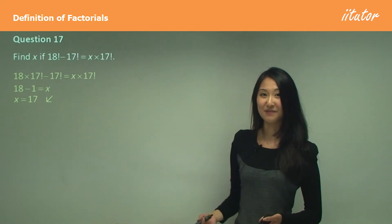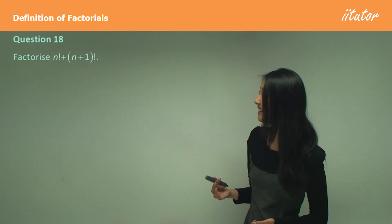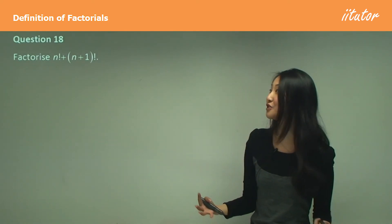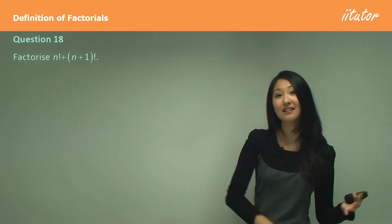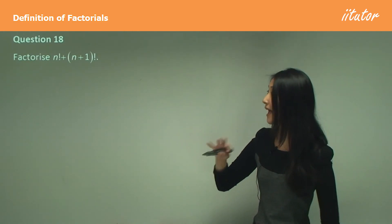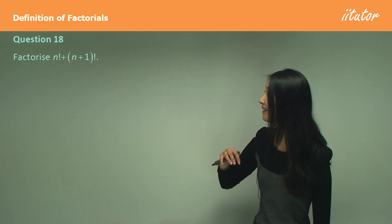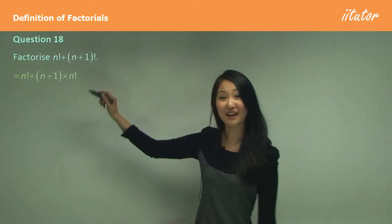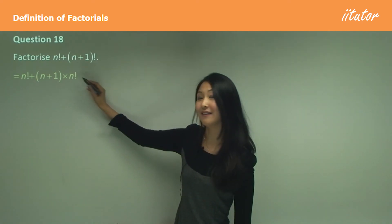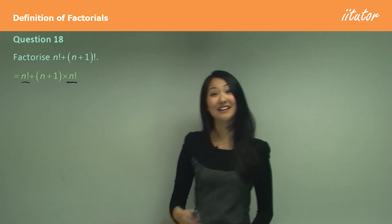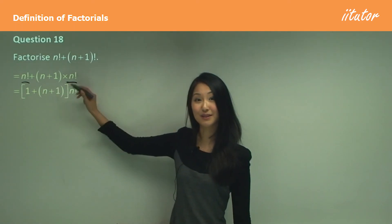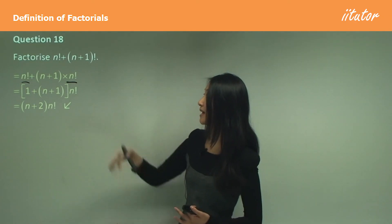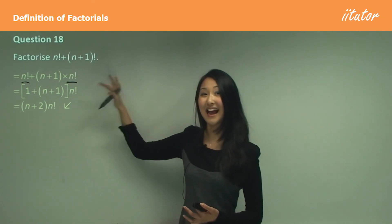Once you get used to factorials it's really not that difficult — you just treat them like normal numbers. Question 18: factorize n factorial plus (n+1) factorial. We need a common factor. Change (n+1) factorial to (n+1) times n factorial. Now n factorial is the common factor: factorize it out to get n factorial times (1 + (n+1)), which simplifies to (n+2) times n factorial.